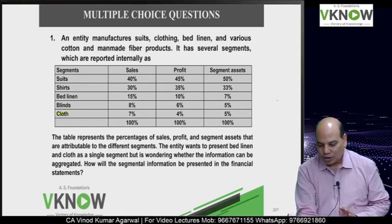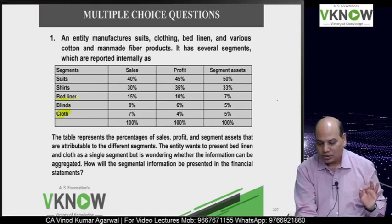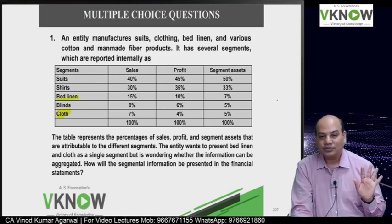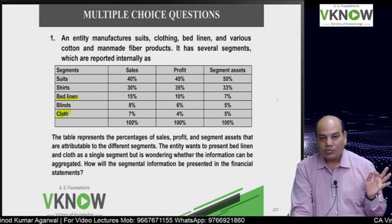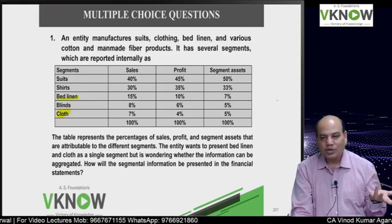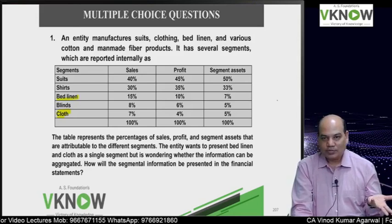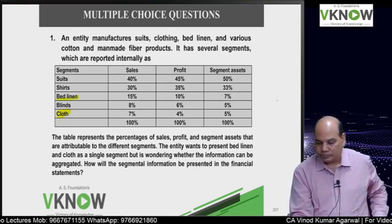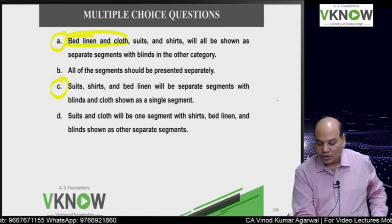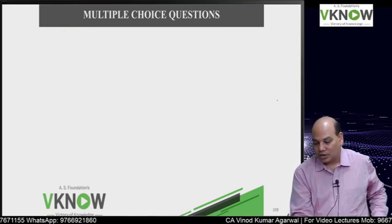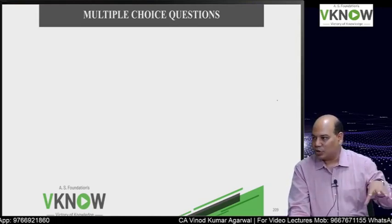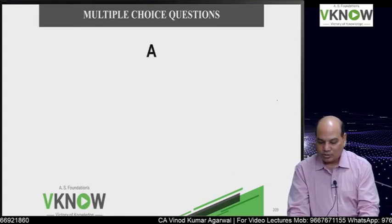The nature of products and services are similar - not the same, but similar. Type or class of customer: similar. Production method: similar. Distribution channel: similar. Regulatory environment: may be the same. So majority of the criteria are met. If they want, they can aggregate - that is the right answer. Management has a lot of discretion in this standard. As long as you are within the definitions and provisions of the standard, you can do it. The answer is A.